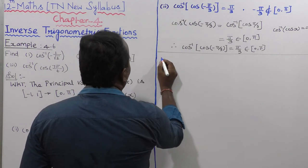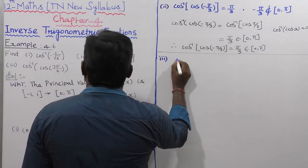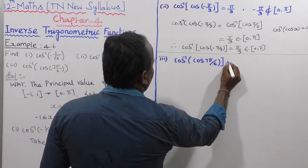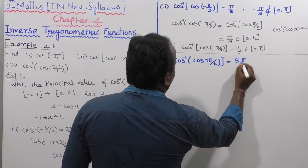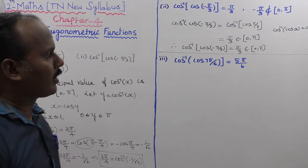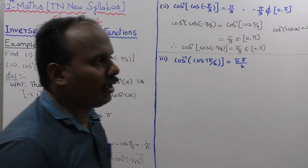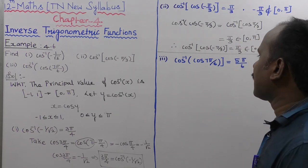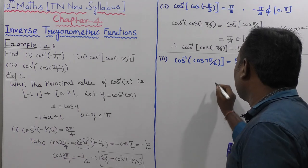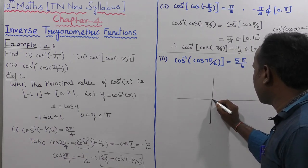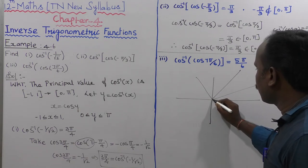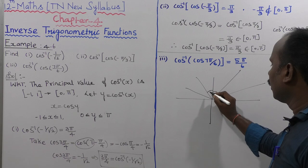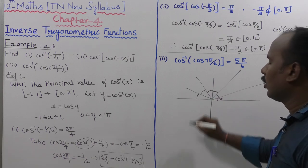Third substitution: cos inverse of cos(7π/6). The answer will be 5π/6. Here 7π/6 corresponds to pi plus pi by 6, i.e., 180 + 30 degrees. Using the graph, we identify positions at 30°, 60°, 90°, 120°, 150°, and 180° on the unit circle.